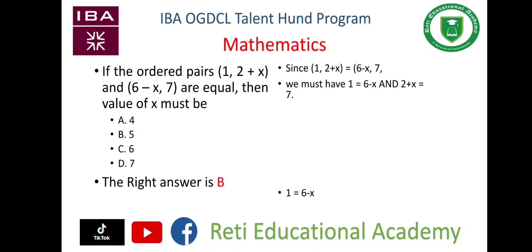Finding the value of x from the first equation: 1 = 6-x. When 6 is subtracted from both sides, there will be -5 = -x.